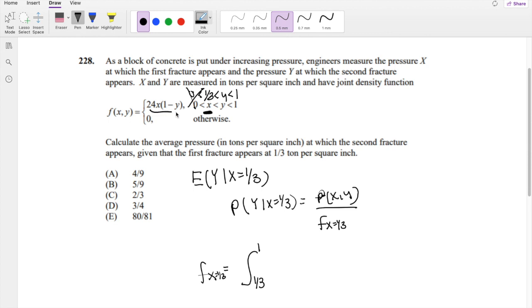Plugging it into this formula right here, 24X, we know it's to be one third, times one minus Y. And we're solving in terms of DY. Again, that's our formula in order to find the marginal distribution function for F of X. This is our formula, so that's what we're doing.